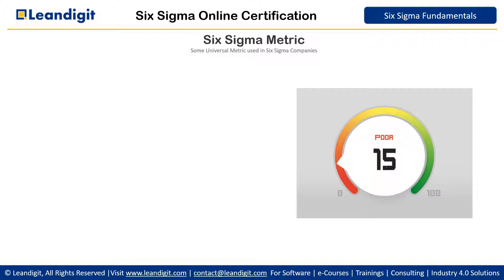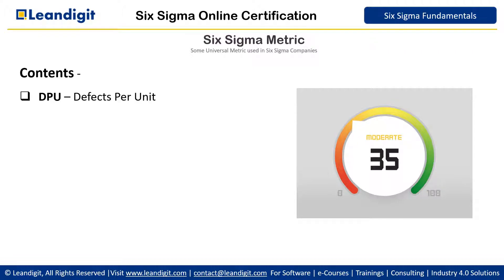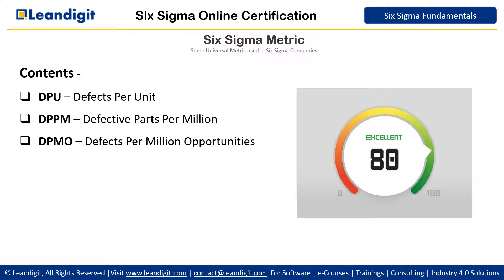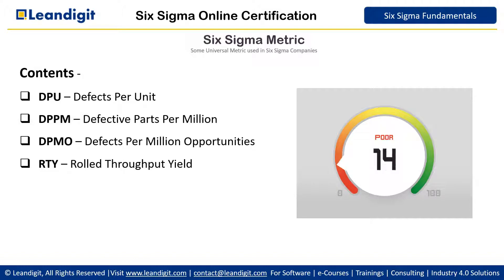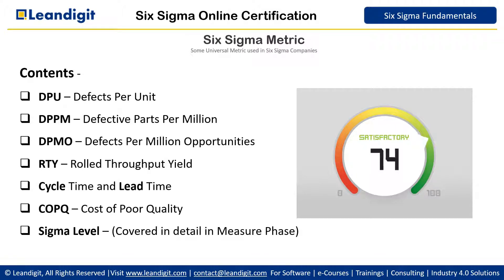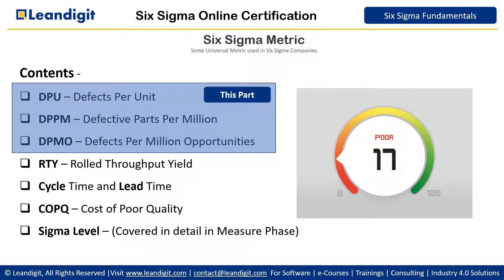In this video, we are going to cover various Six Sigma metrics, which includes DPU (Defects Per Unit), DPPM (Defective Parts Per Million), DPMO (Defects Per Million Opportunities), RTY (Roll Throughput Yield), Cycle Time and Lead Time, COPQ (Cost of Poor Quality), and Sigma Level, which we will cover in detail in the measure phase. The first three metrics we will cover in this part of the video, and the others in the next part.